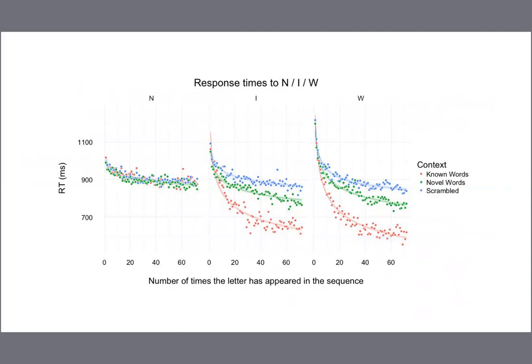Well, no — there's a really big issue here. The previous model looked at the average response time across subjects, but the cognitive mechanisms we are interested in operate at the level of the individual. Average learning curves might not reflect the individual learning curves. To illustrate this: the red line in the graph on the right is the average and looks relatively smooth and gradual, but the light gray lines being averaged each involve a steady response time for some period of time followed by a sudden drop — anything but smooth and gradual. The shape of the individual lines is the most important piece of information, because we're interested in cognitive mechanisms operating at the level of the individual.